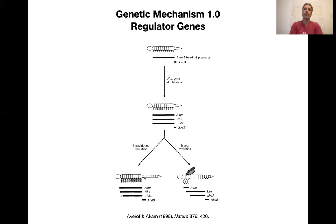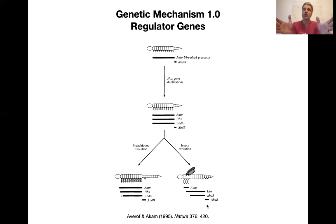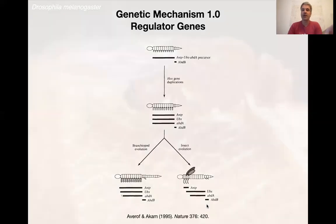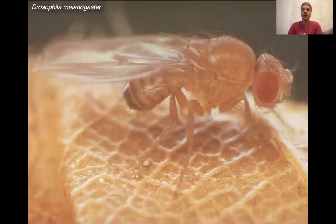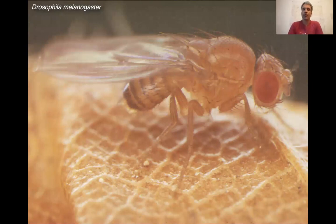I'm showing you here a beautiful study by Michalis Averof and Michael Akam on the identity of different arthropod segments and how they correspond to the rearrangement of different Hox domains. But it leaves many things, many answers open. For example, you now know how you switch from one valley to the other, but the exact shape of each of the valleys is not clear. So let's move forward and develop this type of explanation a little further.